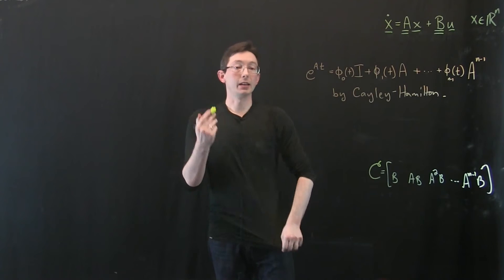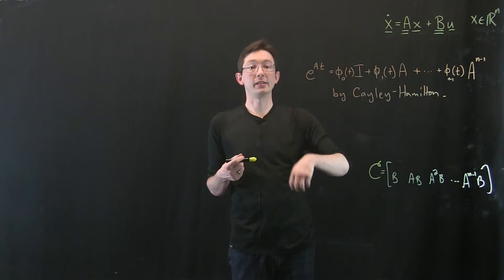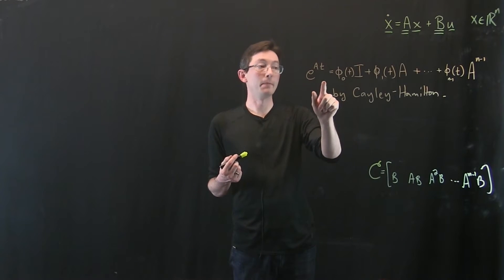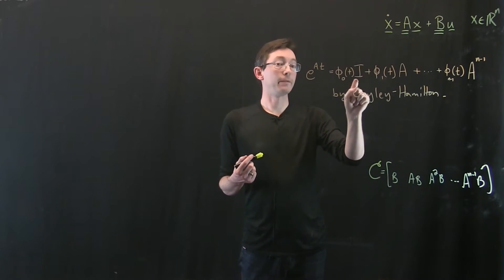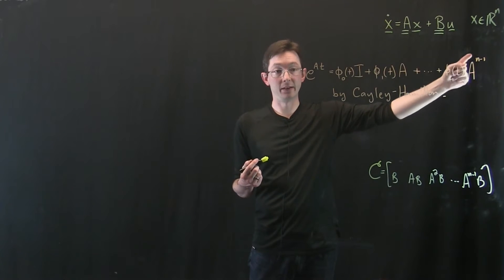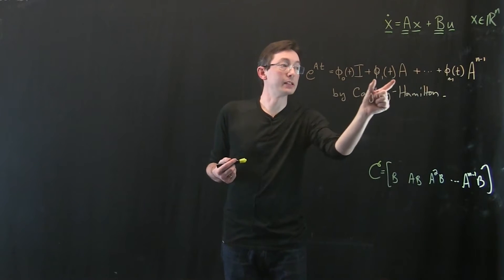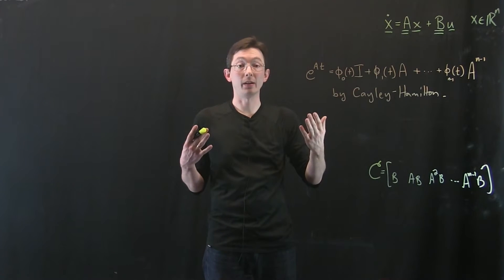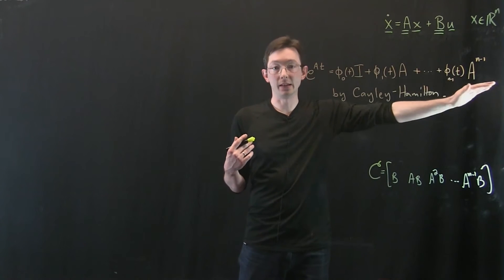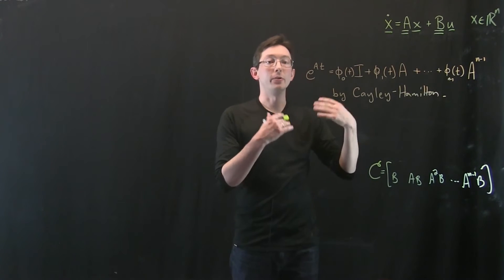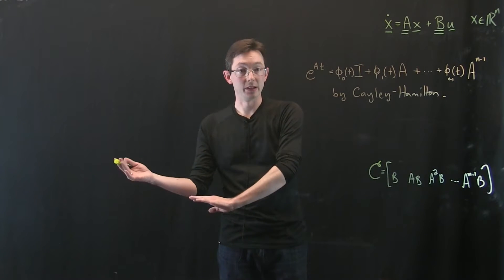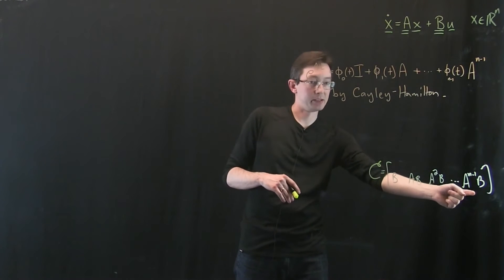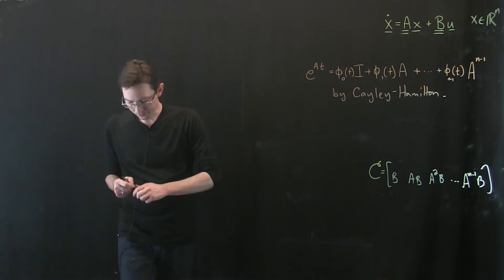So remember Cayley-Hamilton theorem says that this matrix A satisfies its own characteristic equation, which means that I can write this e^(At) as a sum of a finite series of powers of A up to A^(n-1) with these time varying coefficients. Now actually computing these time varying coefficients may or may not be very difficult, but the fact that I can represent this as a finite sum is going to allow me to mathematically show that reachability and controllability are equivalent. And notice this power of A to the n minus 1 is the same as in our controllability matrix.